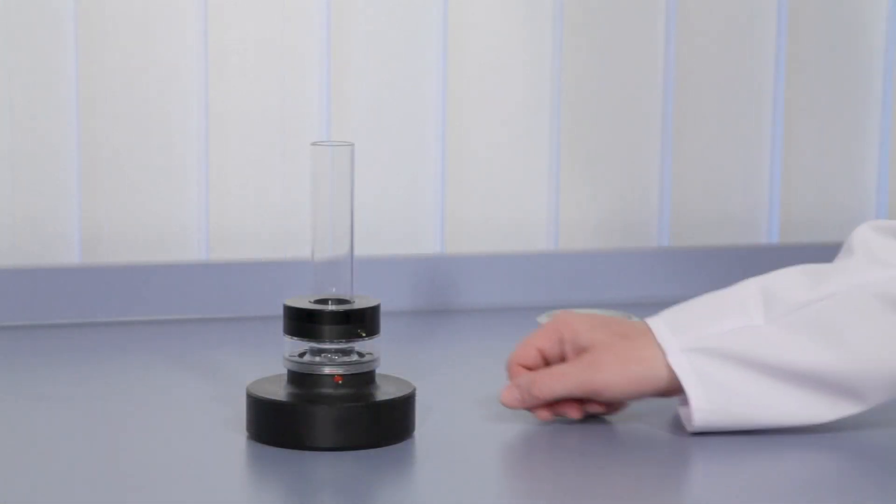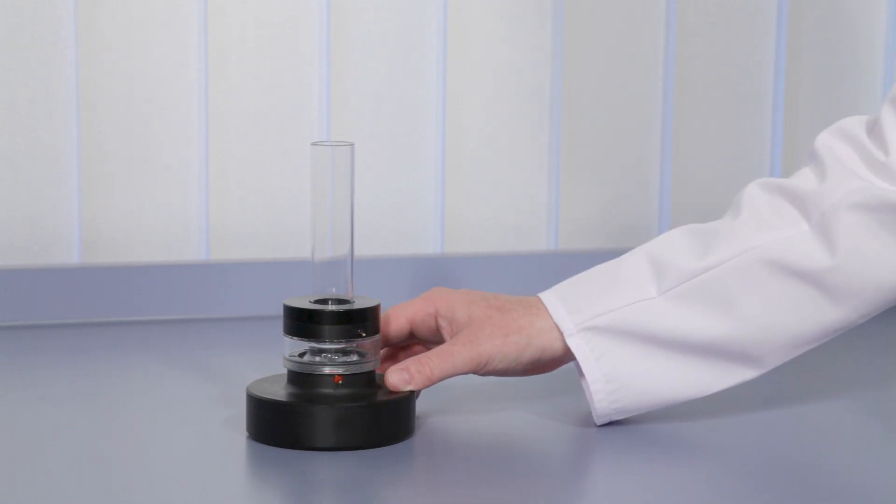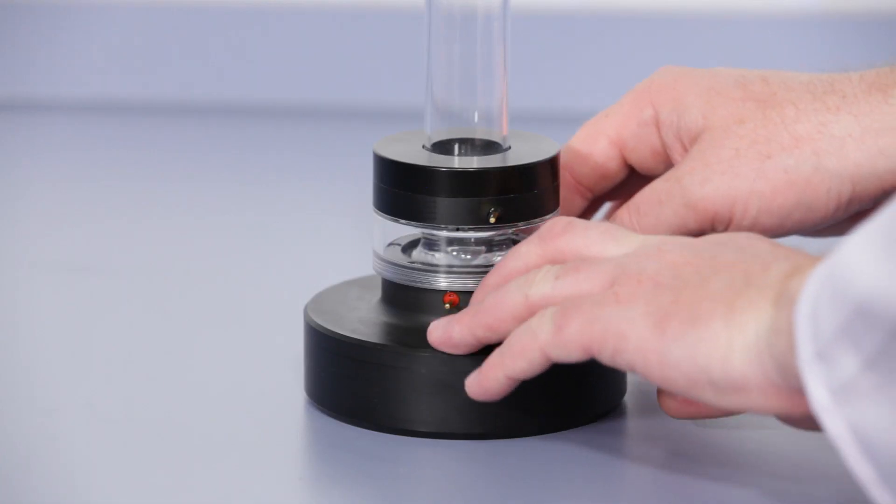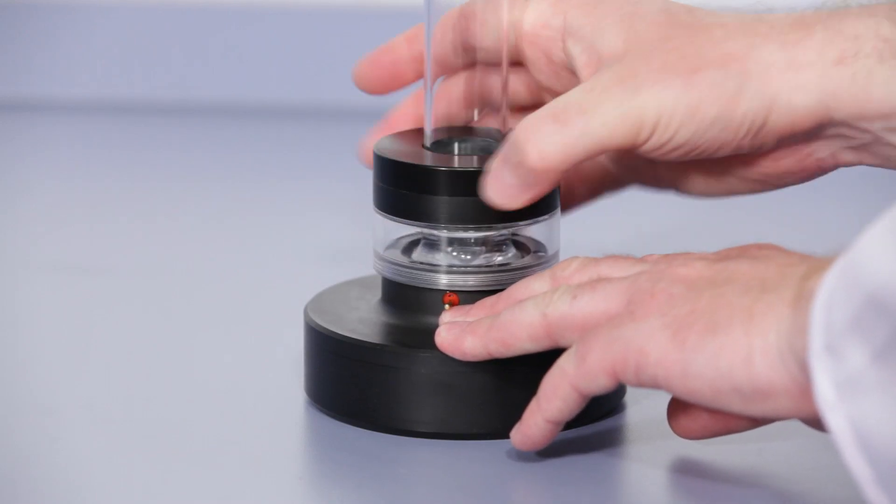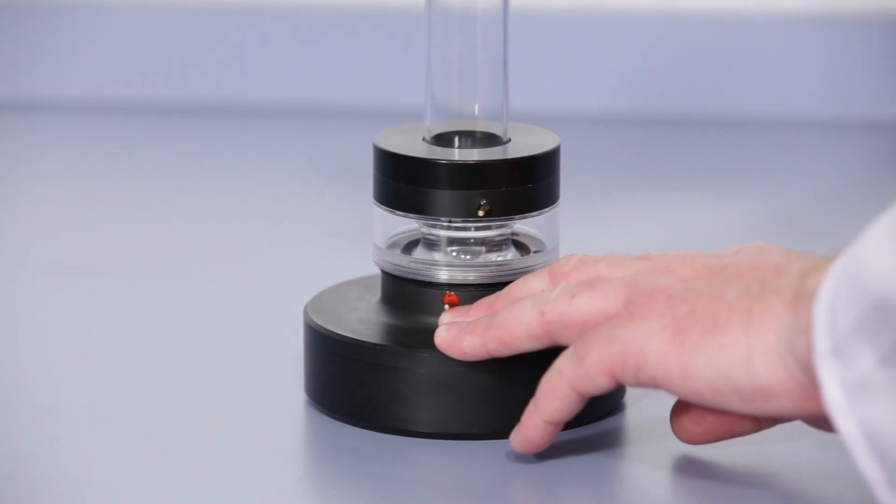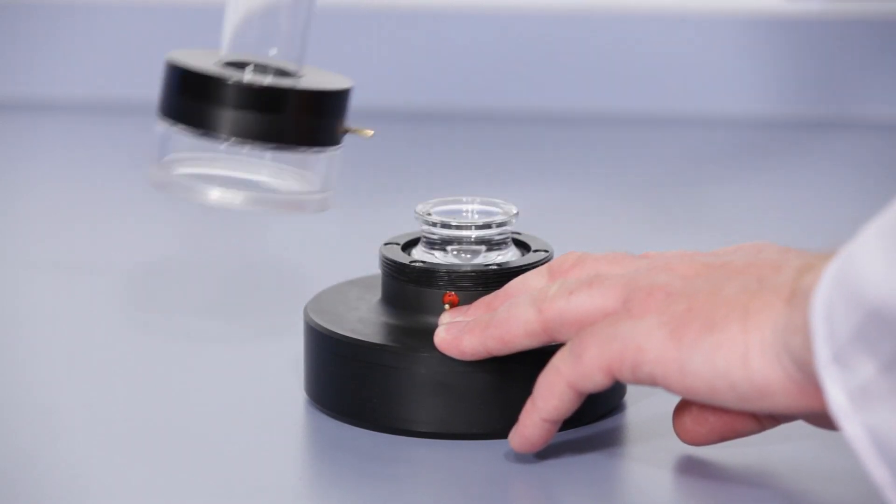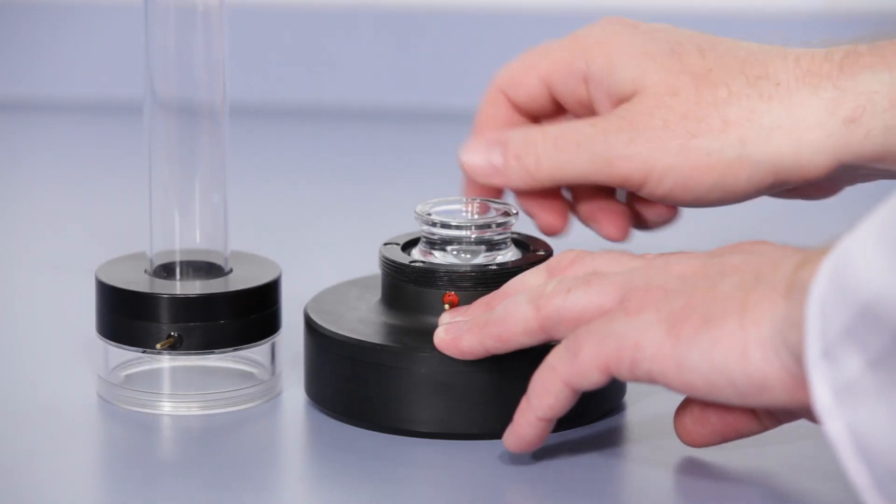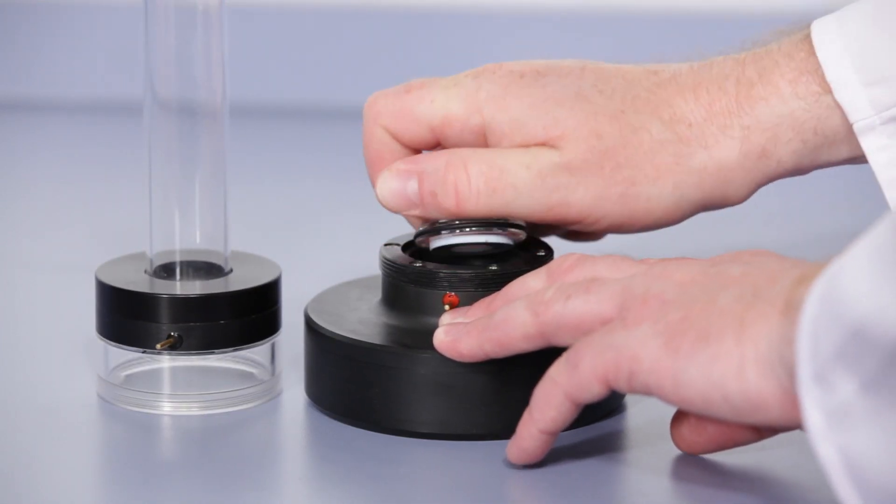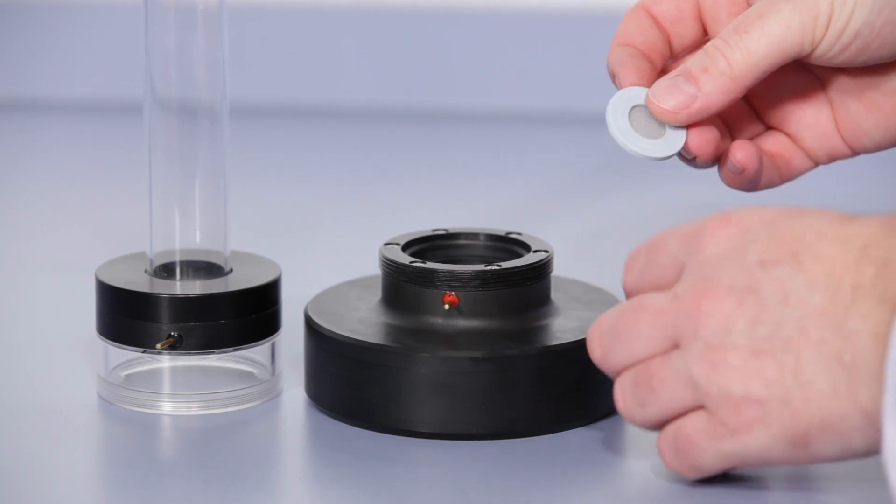To open the measuring cell, place it upside down on the worktop and unscrew the suction tube. Then, remove the adapter piece to access a plastic screen inside the measuring cell.